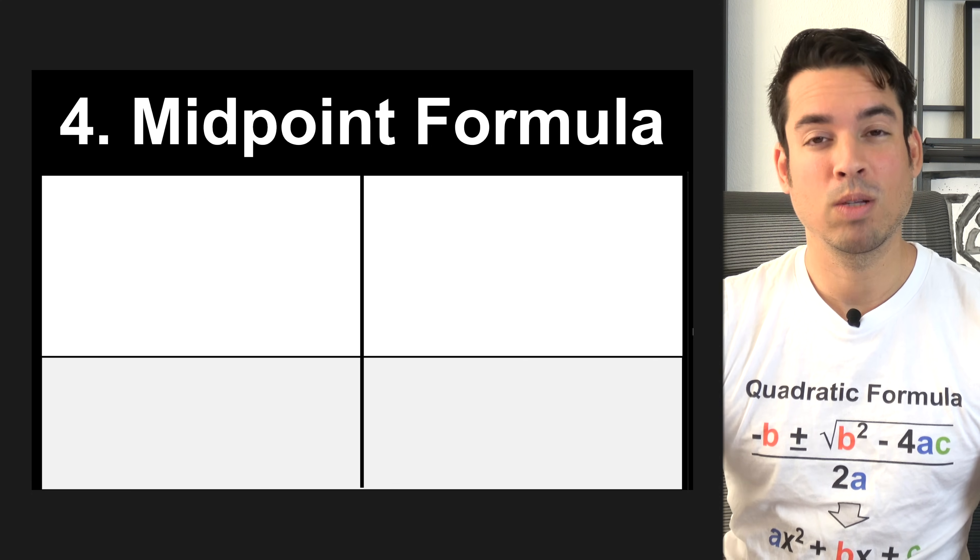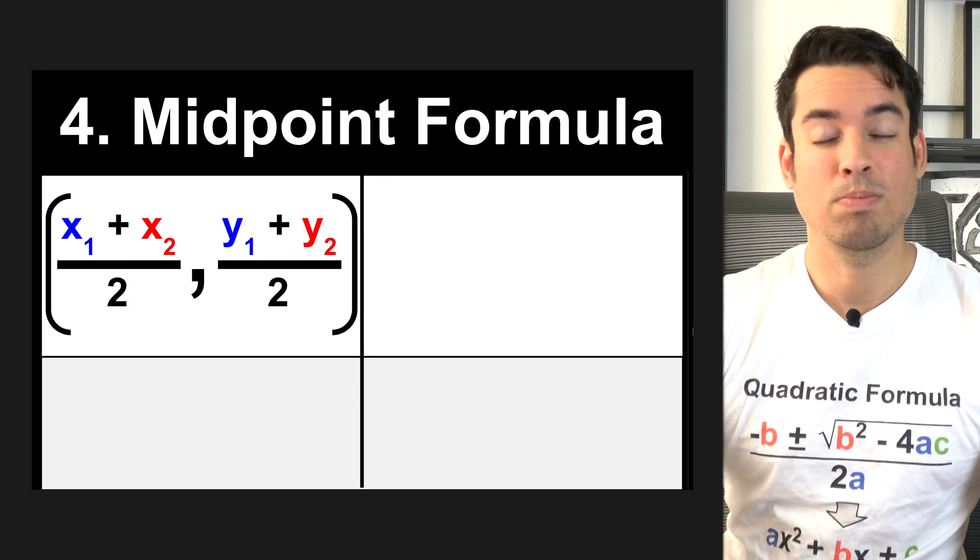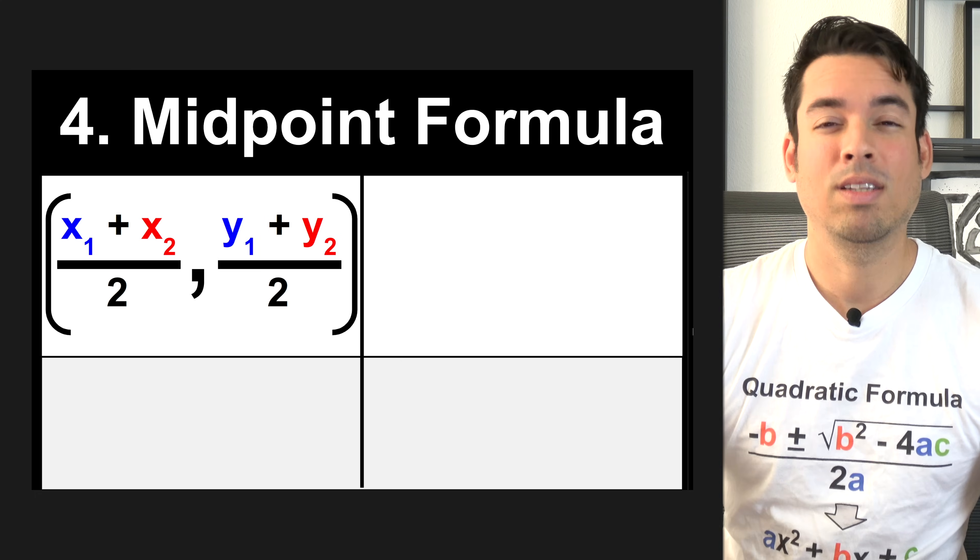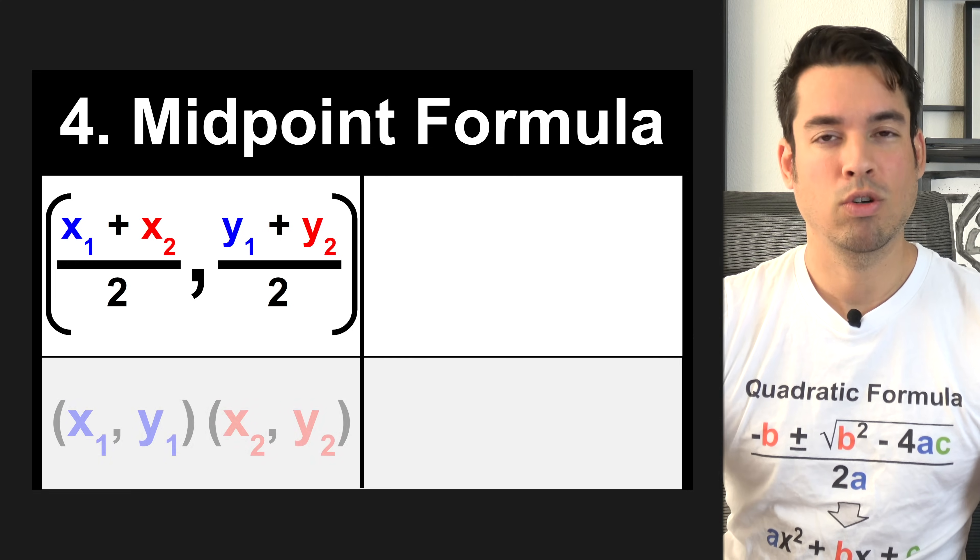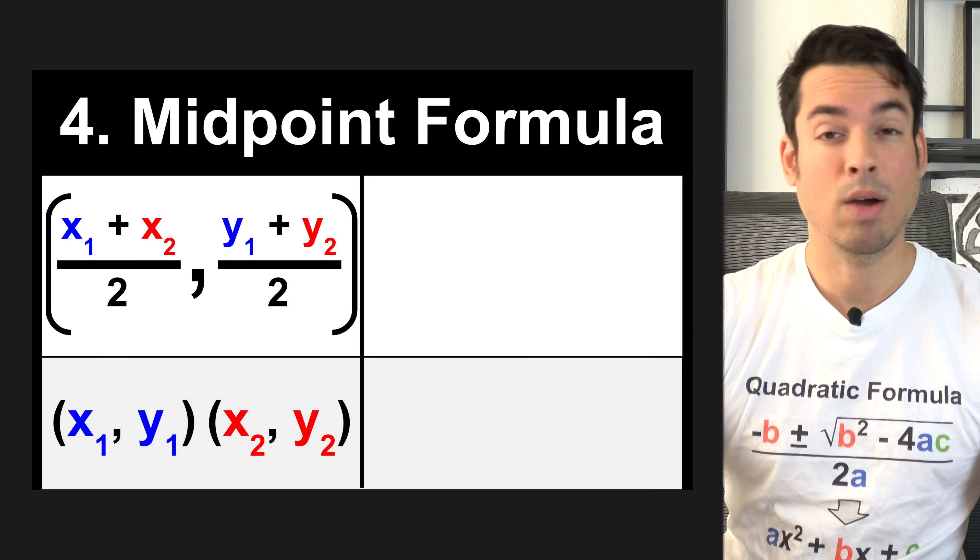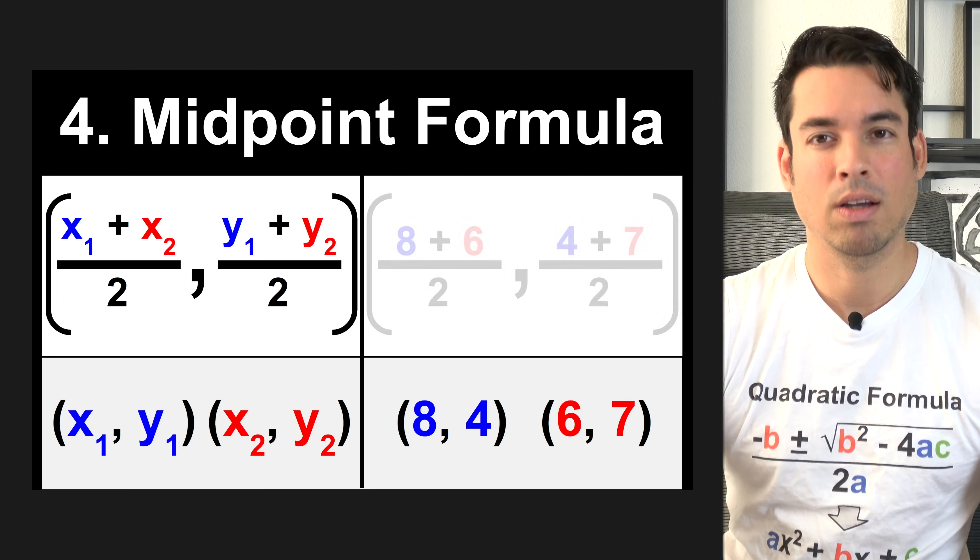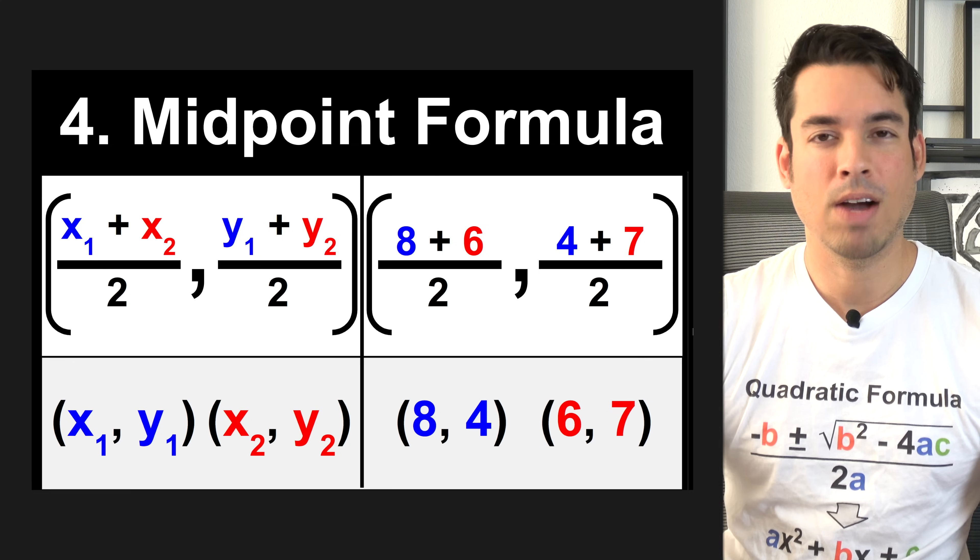Next, we have the midpoint formula, which calculates the middle of any line segment. The midpoint formula is X1 plus X2 divided by 2 comma Y1 plus Y2 divided by 2. Essentially, you're taking the average of the two coordinates. Taking these coordinates as examples, if we were to plug them in, it would look like this, and the midpoint would be 7 comma 5.5.